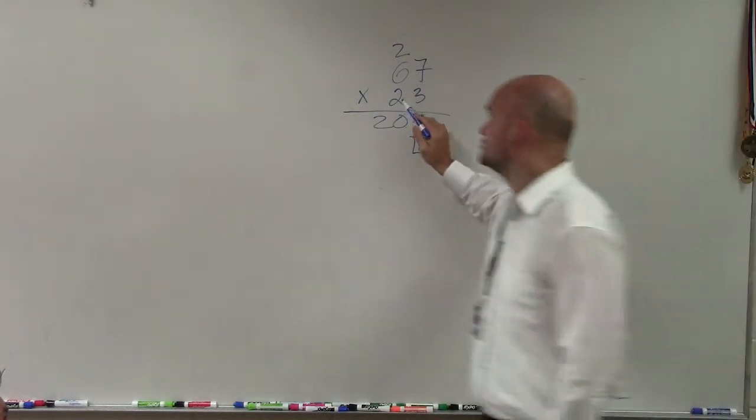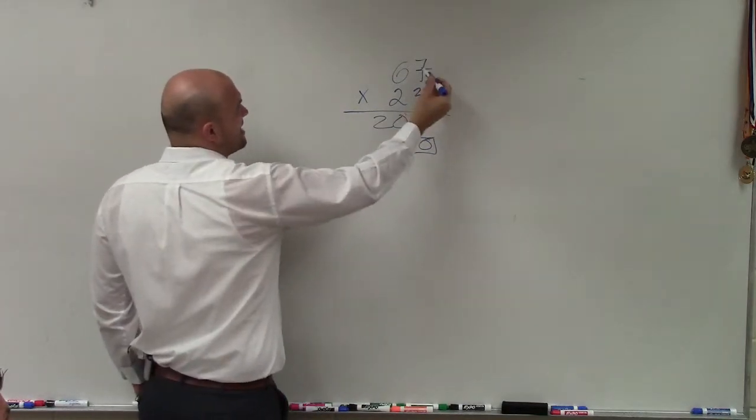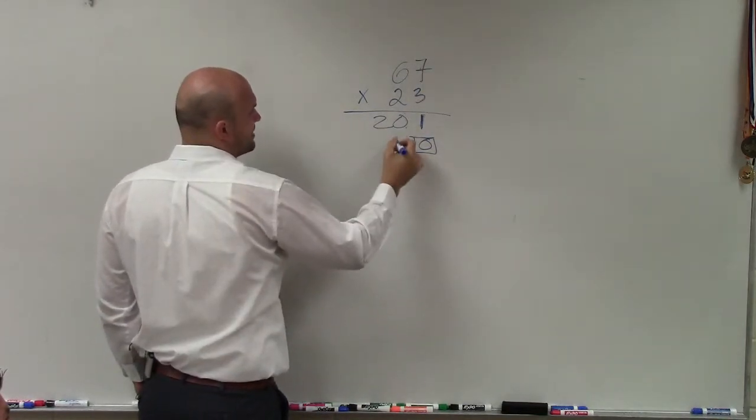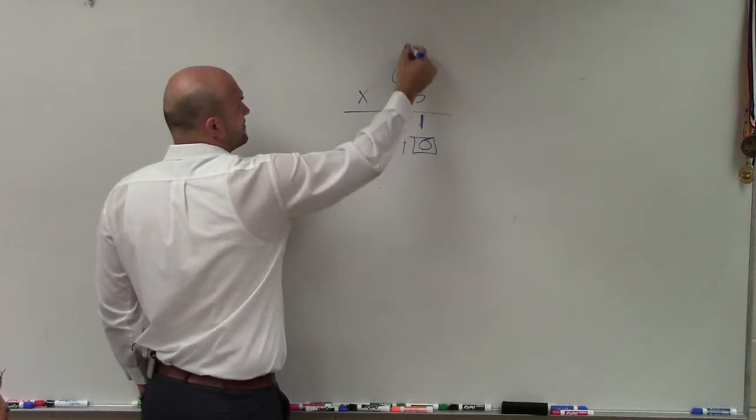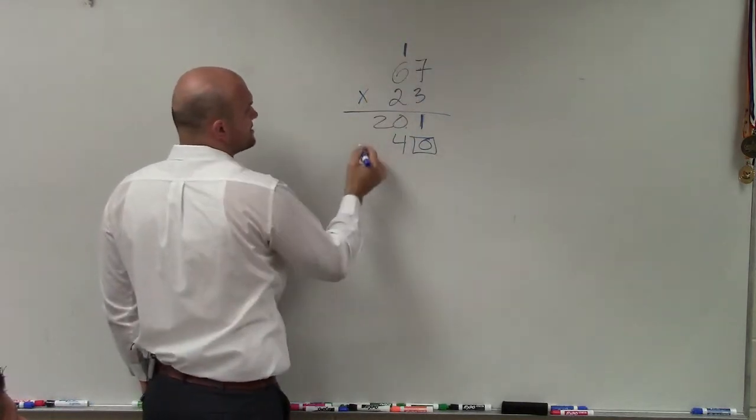So now, I just do 2. So I can kind of erase this, which is helpful when using a pencil. 2 times 7, which is going to be 14. So I bring down the 4, bring up the 1. 2 times 6 is 12, plus 1 is going to be 13.